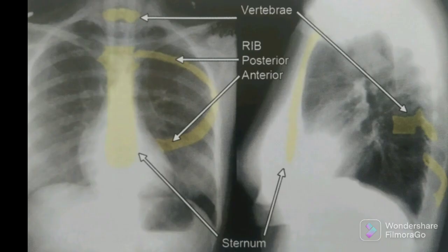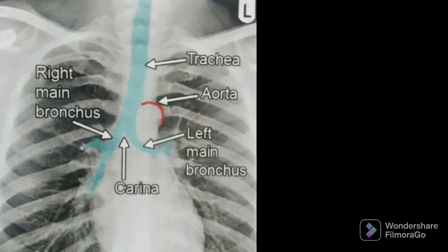Talking about bony structures — highlighted here in yellow — we have the sternum, anterior and posterior ribs, and the vertebral body, which is nicely seen in a lateral view along with the spinous process. Talking about the trachea, we can see the airway going down as a radiolucent shadow, and it can deviate to the left or right in many conditions. We can also visualize the left and right main bronchus along with the carina.